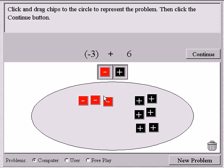So I have negative 3, that's 3 reds, plus positive 6, that's 6 blacks. I'm going to continue.